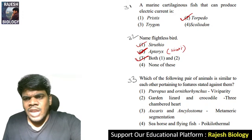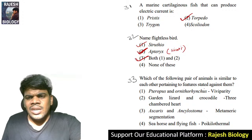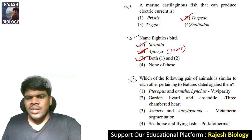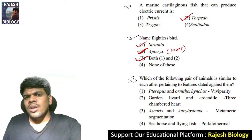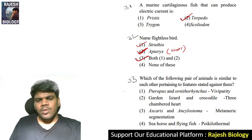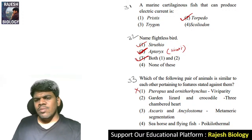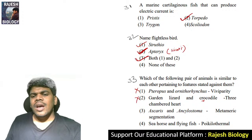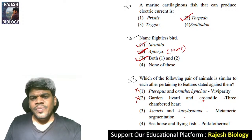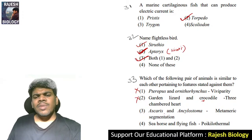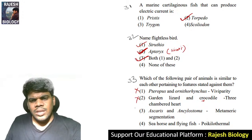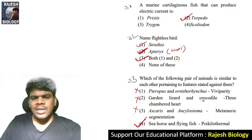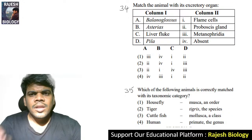Thirty-third question: which pair of animals is similar in features stated? Pteropus and Ornithorhynchus as viviparous — wrong, Ornithorhynchus is oviparous. Garden lizard and crocodile with three-chambered heart — wrong, crocodile has four. Ascaris and Ankylostoma with metameric segmentation — wrong. Sea horse and flying fish are both poikilothermic cold-blooded animals — correct. So thirty-third is option four.